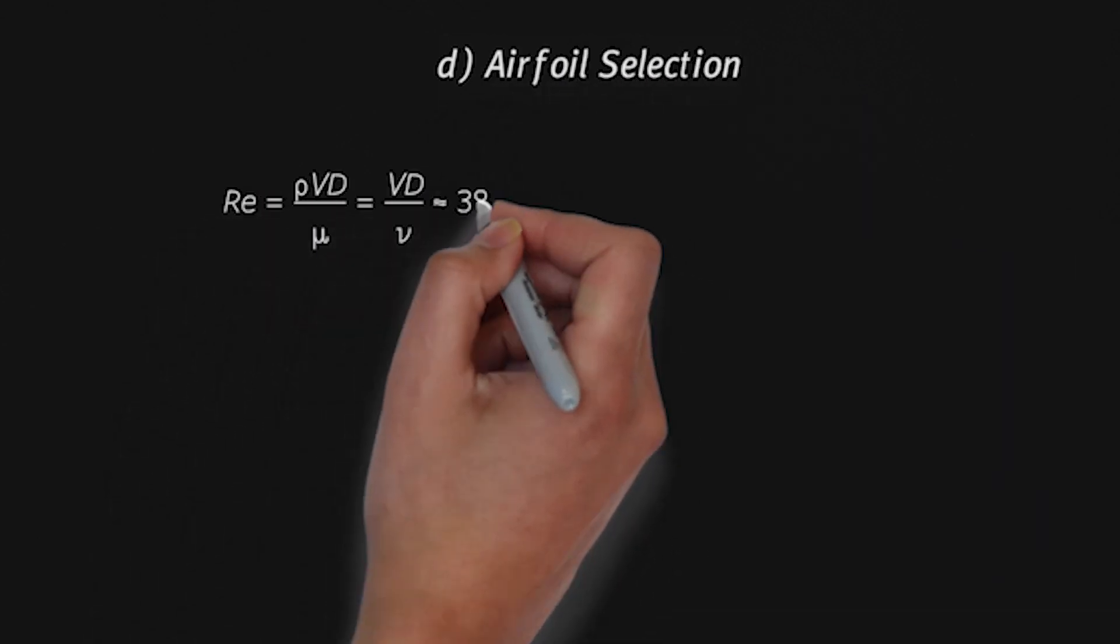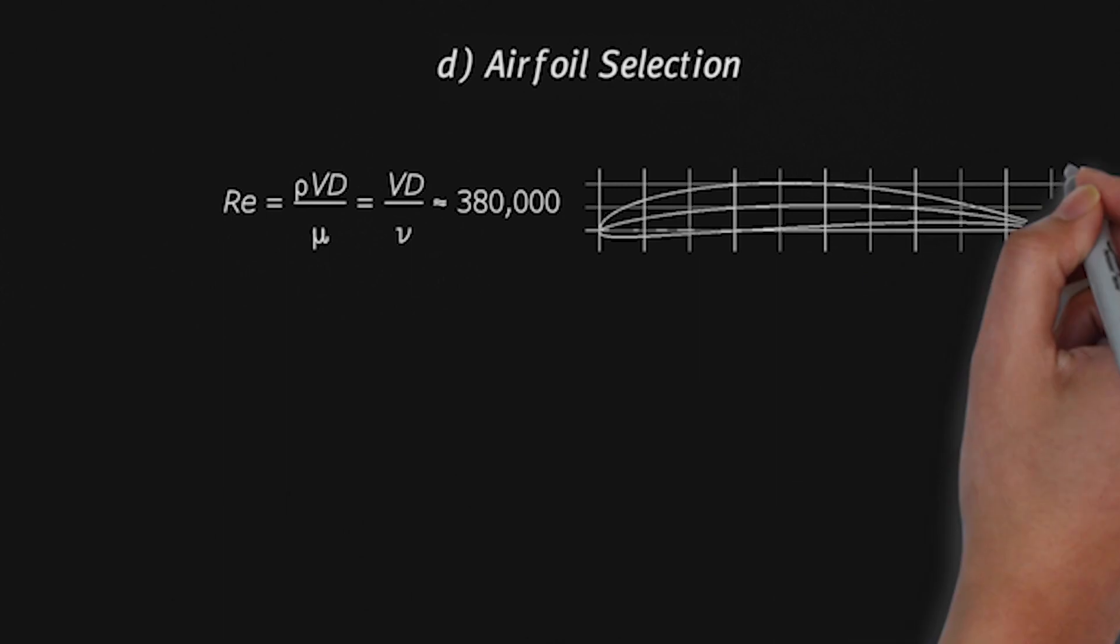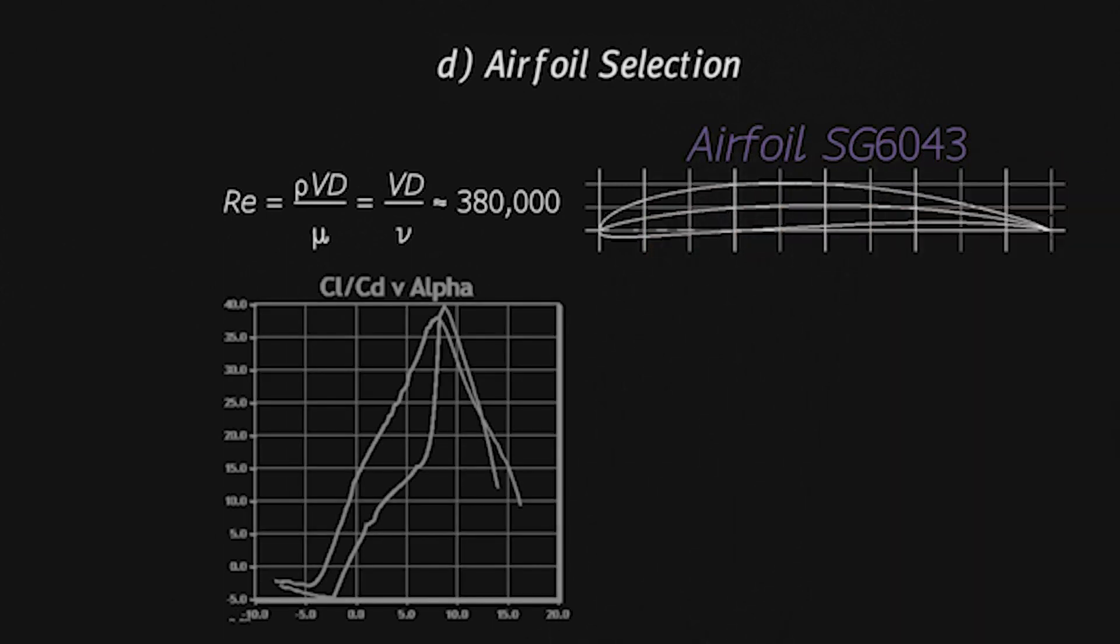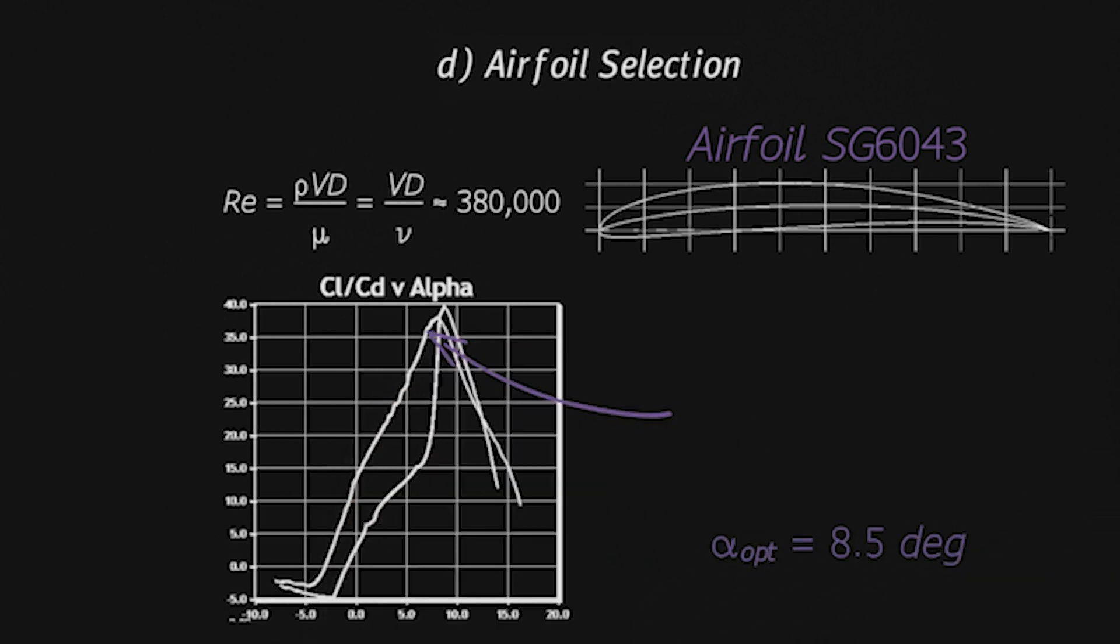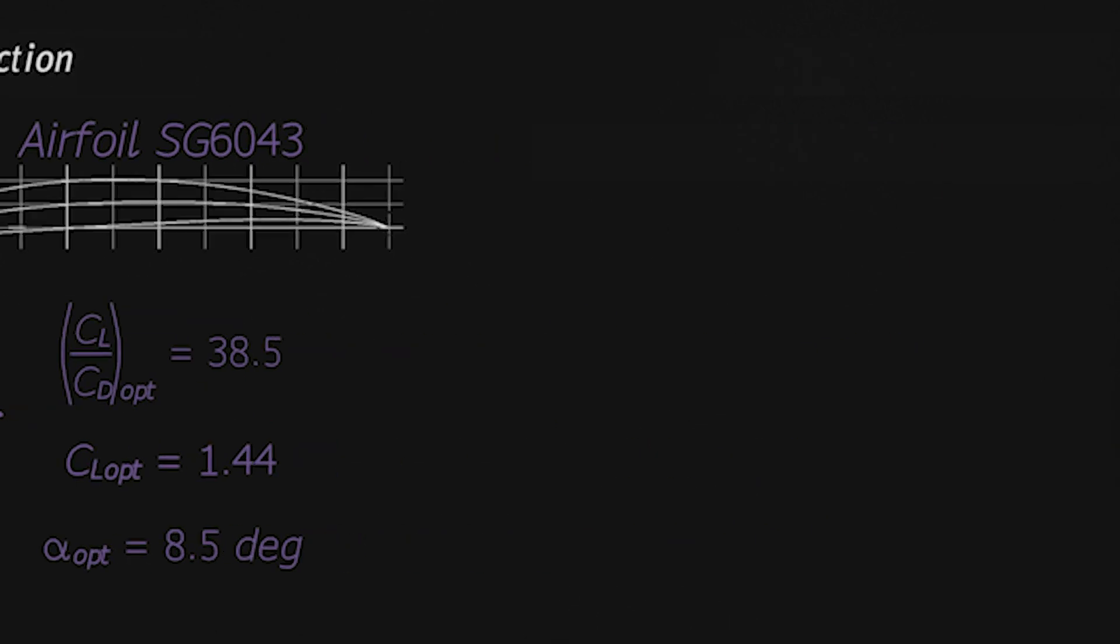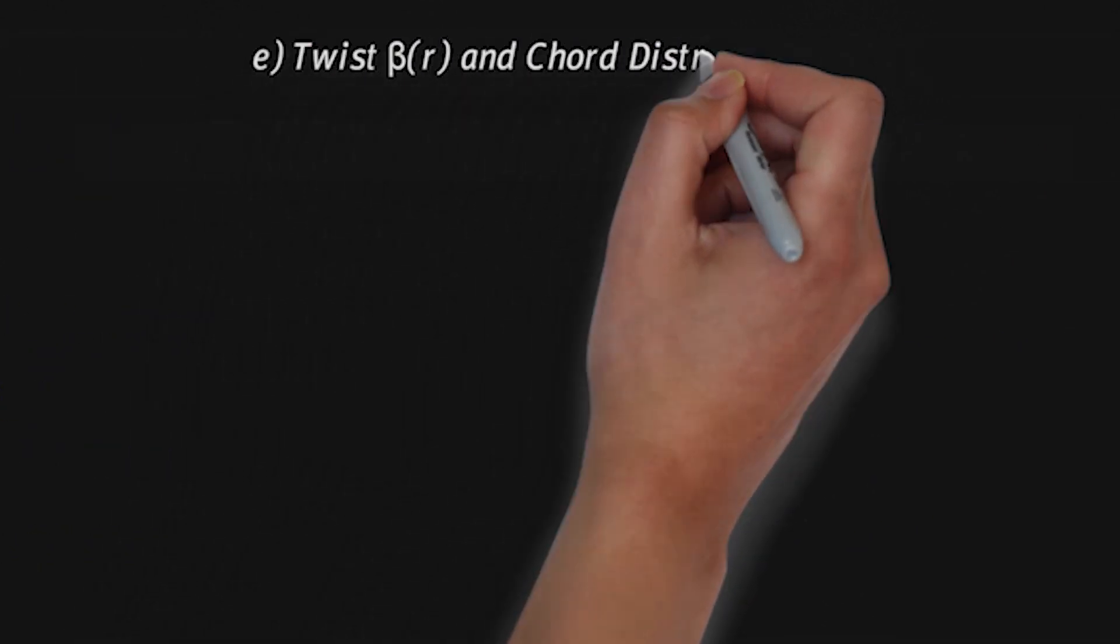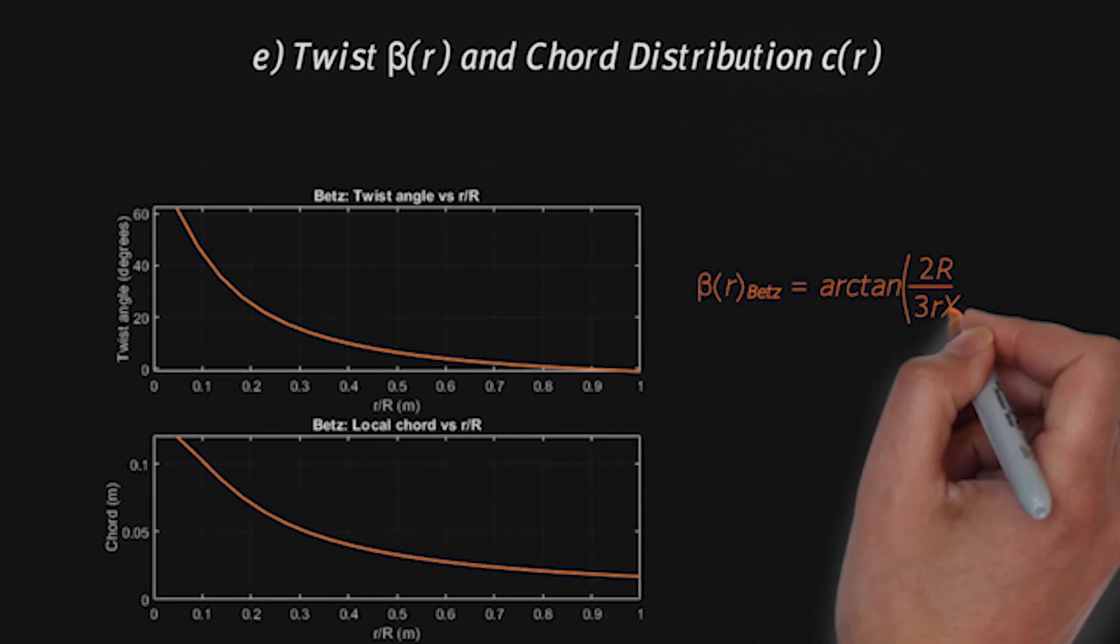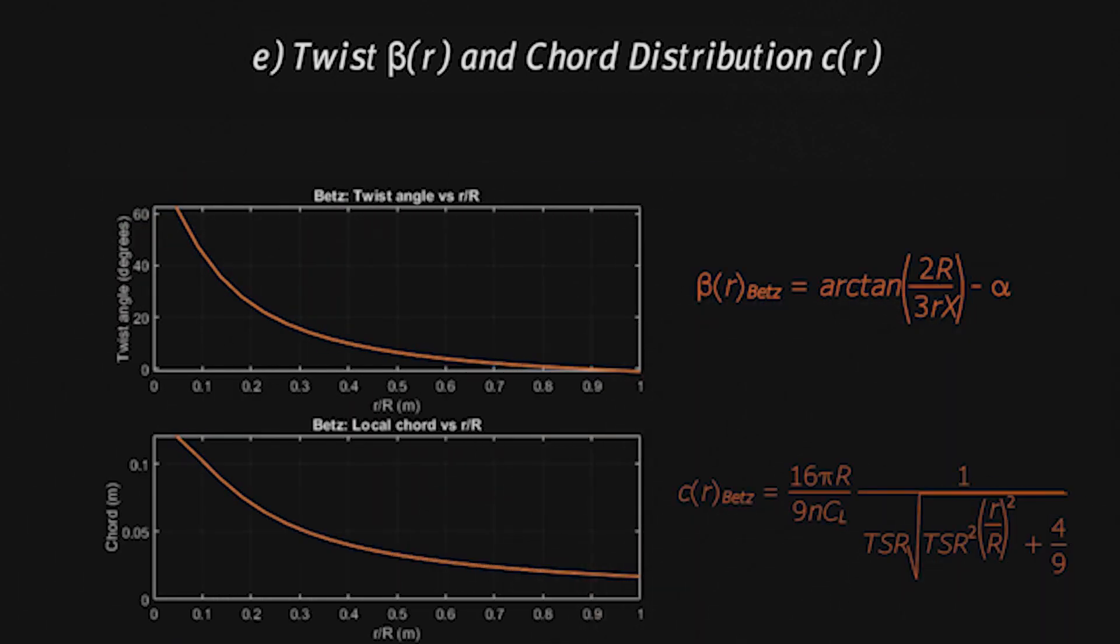Having decided on the diameter, the Reynolds number was found to be of order 10 to the 5. For such low Reynolds numbers, the Airfoil Series SG6043 delivered the best lift-to-drag ratios and a corresponding optimal angle of attack of 8.5 degrees. It is also not too thin, so structural integrity should not be an issue. Now that we know our TSR radius, optimal lift coefficient and optimal angle of attack, the last step is to calculate the twist and chord variations along the blades.